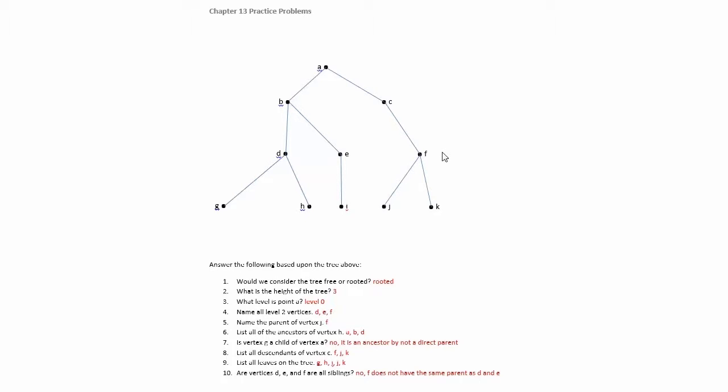Name the parent of vertex J. So here's J. And if we go back, we will find that F is going to be its parent.